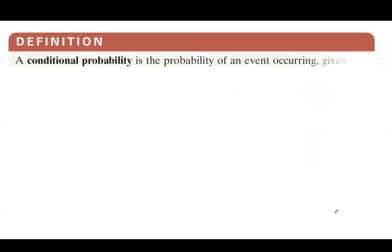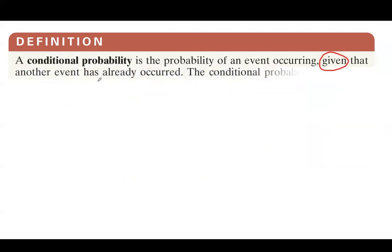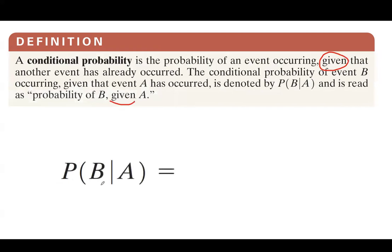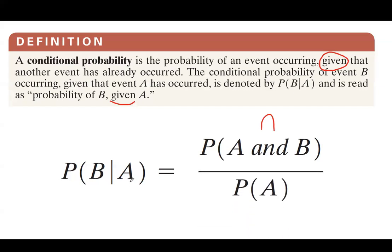A conditional probability is the probability of an event happening given that another event has already occurred. The conditional probability of event B given event A is denoted P(B|A), where the vertical line represents the given condition. It equals the probability of their intersection divided by the probability of the given event: P(B|A) = P(A ∩ B) / P(A).